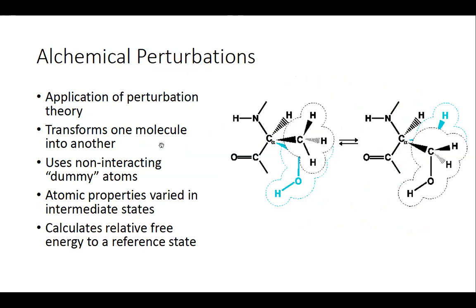The version that this paper mostly focused on was alchemical perturbations, which applies perturbation theory. It transforms some molecules on your reference molecule into others, or it transforms them into non-interacting dummy atoms. You can calculate relative free energy based on those transformations.